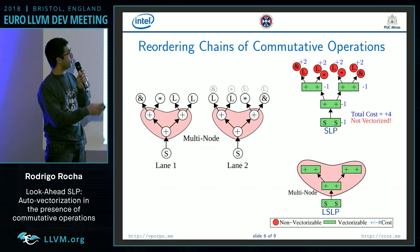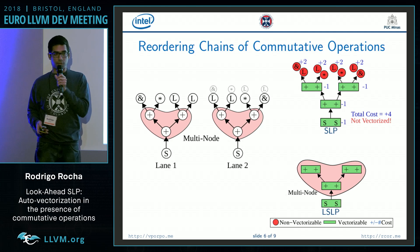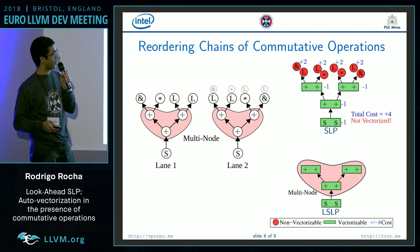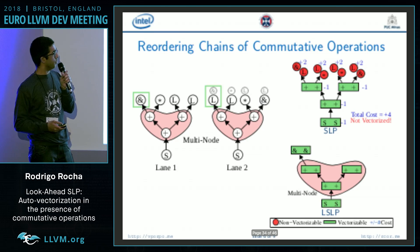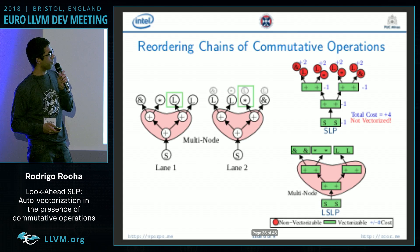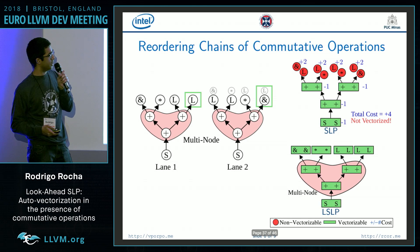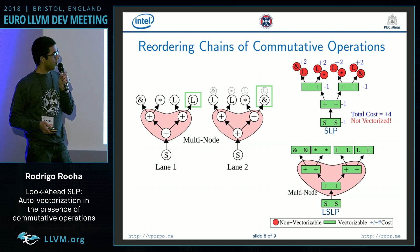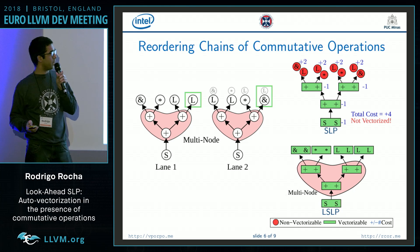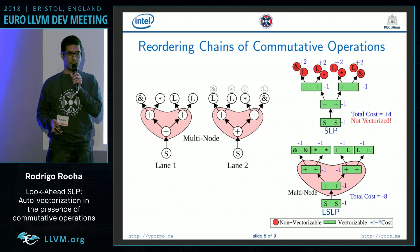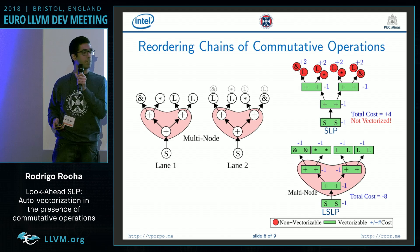Now that we've performed this reordering of the operands, we continue building the SLP graph and are able to match all operands. Applying the cost model, we see that we can now fully vectorize this piece of code.